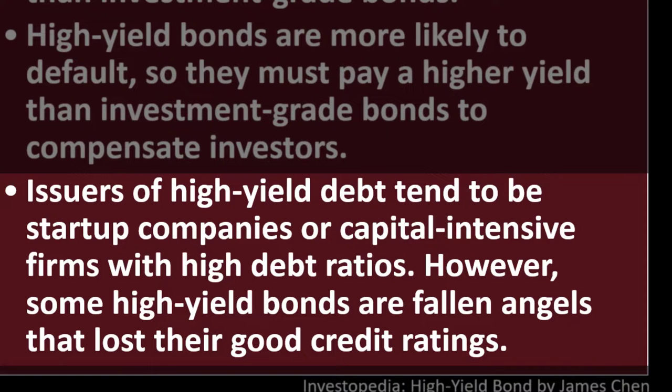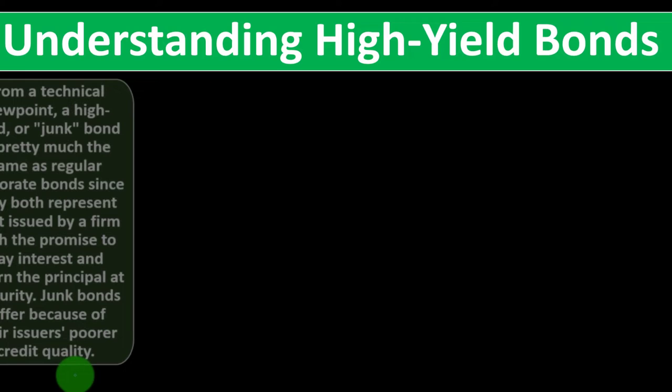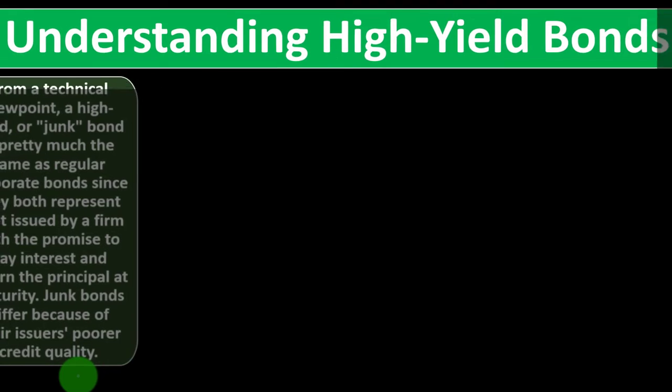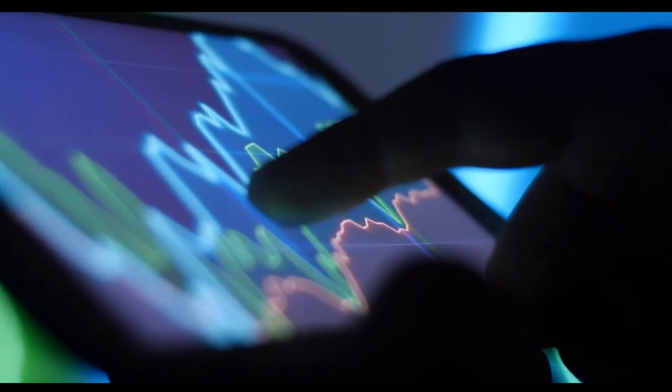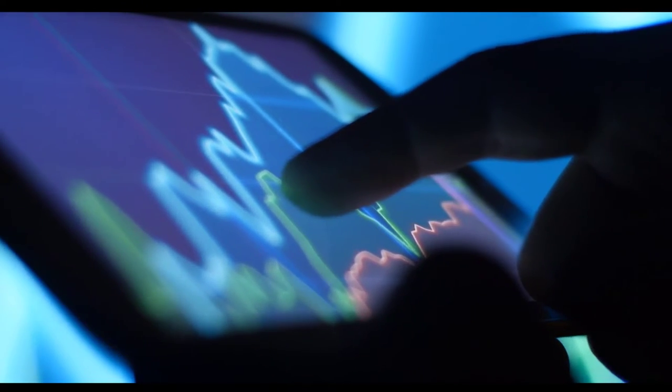However, some high yield bonds are 'fallen angels' that have lost their good credit ratings, making it more difficult to get capital and funding. From a technical viewpoint, a high yield or junk bond is similar to a regular corporate bond — both represent debt issued by a firm with a promise to pay interest and return principal at maturity — except now you're dealing with higher-risk corporations.